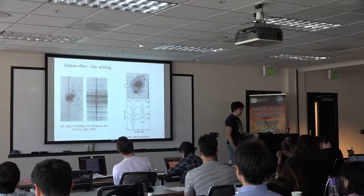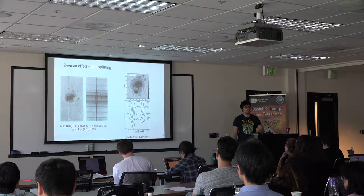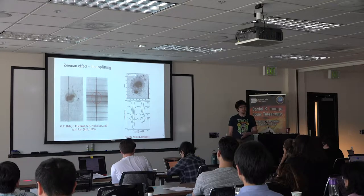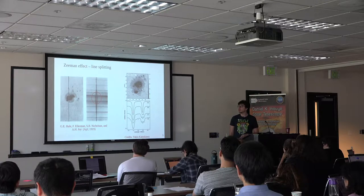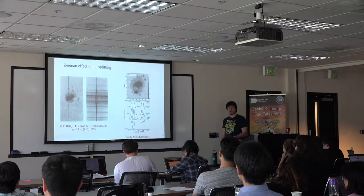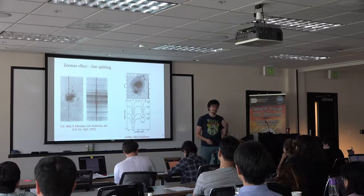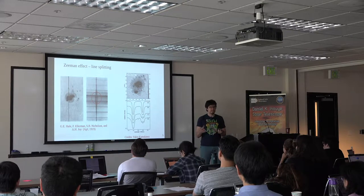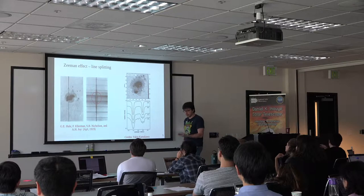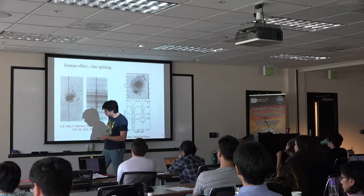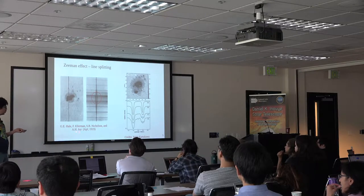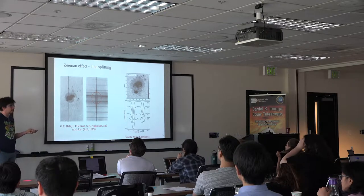The reason we get polarization in spectral lines is the Zeeman effect. If you were in my situation five years ago it wouldn't be obvious why, because when they teach Zeeman effect in quantum mechanics they don't say anything about polarization. What we're usually taught is that it's a perturbation of the Hamiltonian that splits energy levels, and instead of one spectral line we see multiple spectral lines. These amazing people — Hale, Ellermann, and Joy — actually put a spectrograph slit over a sunspot.